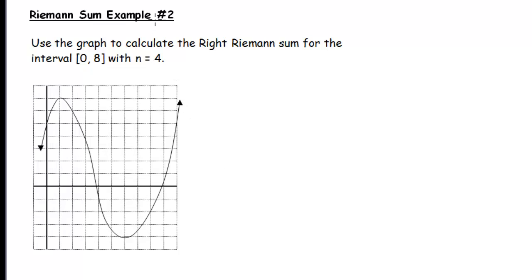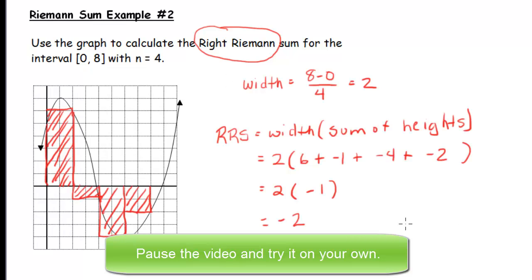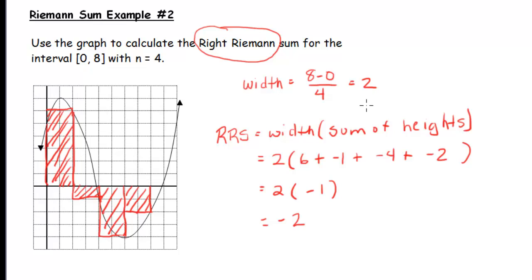Now using the same example, let's find the right Riemann sum — pause the video and try it yourself. For the right Riemann sum, the width is again 2. The most unexpected rectangle is the second one, which lies below the x-axis because the height of the curve on the right side of that rectangle is negative. Notice that the left Riemann sum and the right Riemann sum were quite different in value.